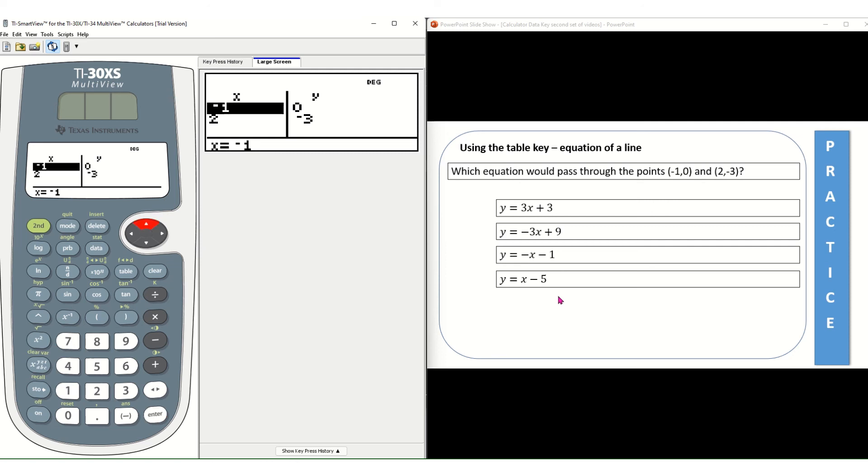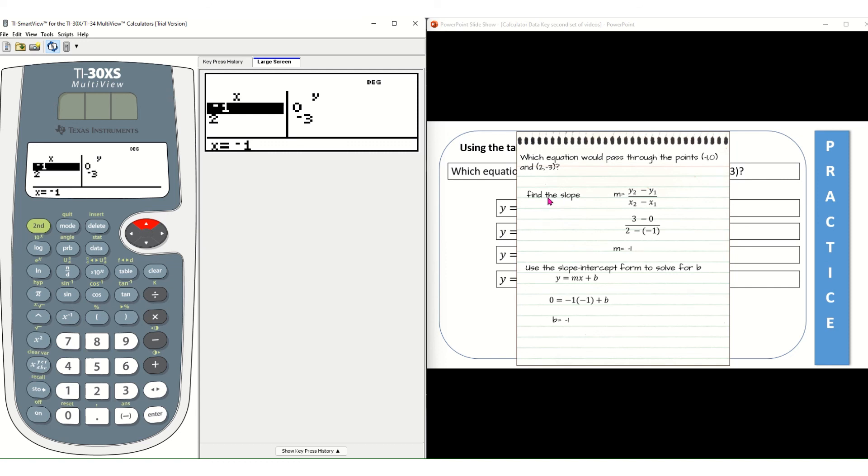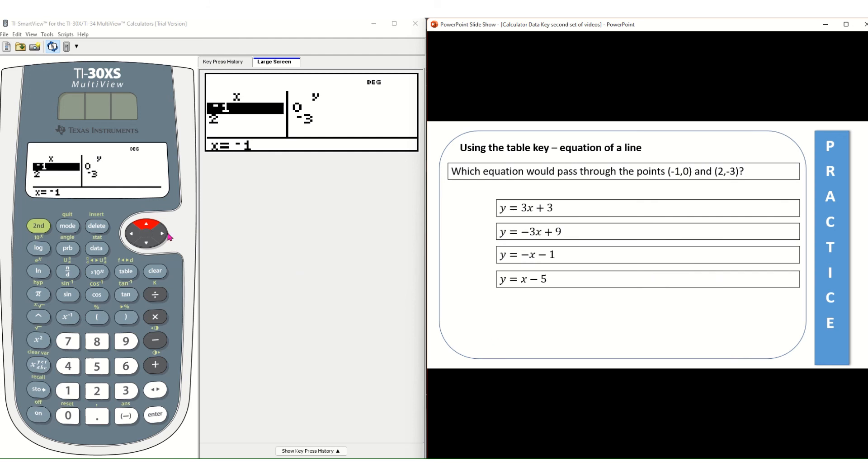But if you forget that you have the slope equation on that formula sheet and you're stuck, you don't know what to do, just know that your calculator can help you out and that's by using the table key to just input the different equations and the different x values for those ordered pairs.